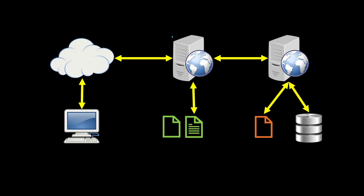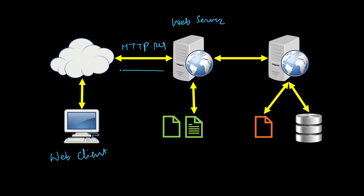If we have a web server, there must be a client — a web client — whom the server is serving. This client sends an HTTP request to the web server, requesting some page or other resources. One possibility is that the requested URL, page, or file is present with the web server, and it will immediately send an HTTP response with that file.